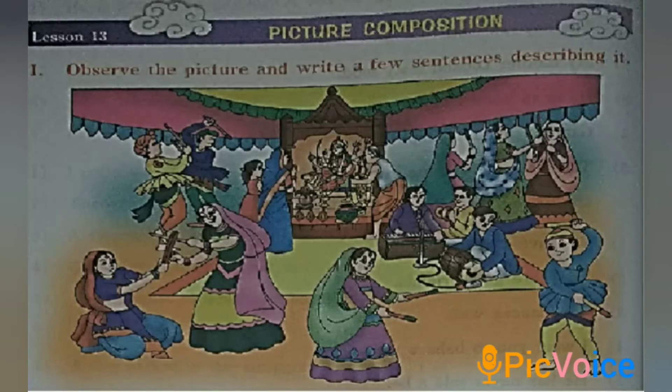Children, here is the picture. Look at it very carefully and understand it. See what the picture is trying to tell you. Describe the picture well — their clothes, their actions — all that has to be described and written down neatly. Now look at the picture and let's see what we can see.